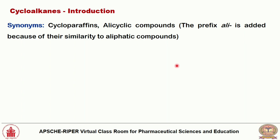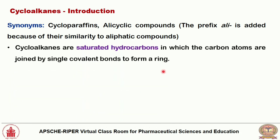Cycloalkanes are also called cycloparaffins, and also known as alicyclic compounds. Because aliphatic compounds are similarly present but in cyclic manner — the prefix 'ali' is added because of their similarity to aliphatic compounds. Cycloalkanes are saturated hydrocarbons in which the carbon atoms are joined by single covalent bonds to form a ring.